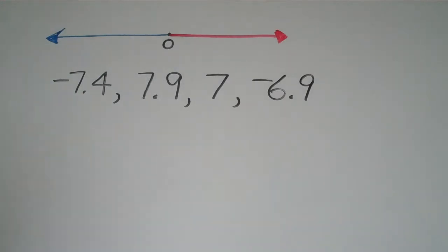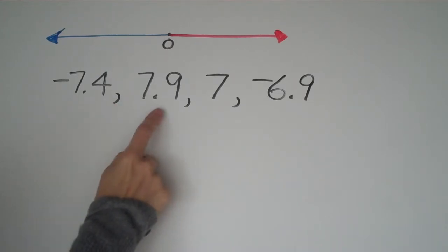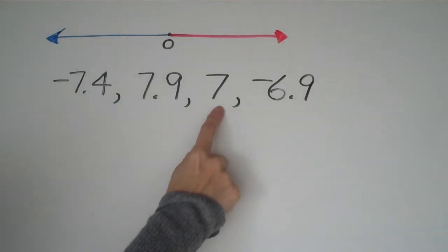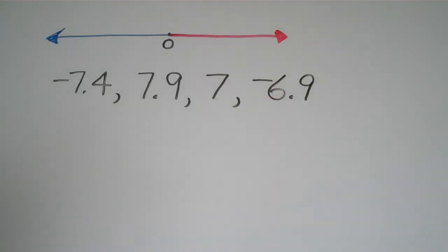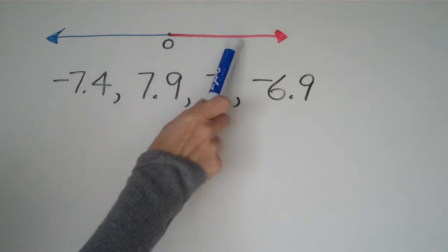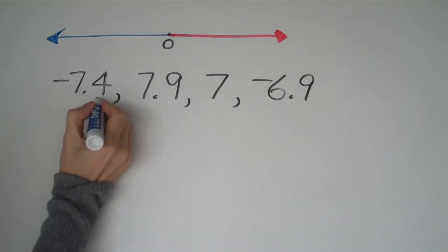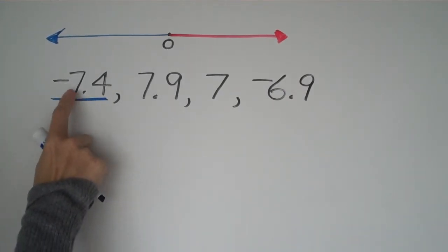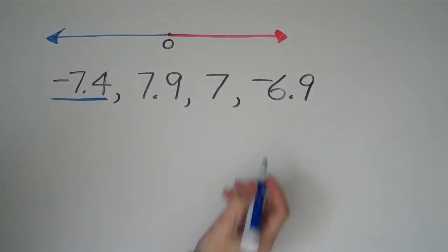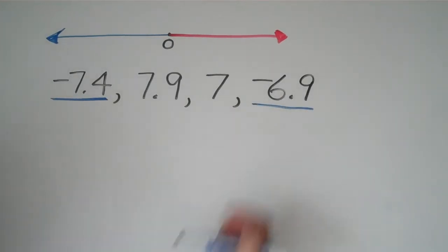Here we go. We have negative 7.4, 7.9, 7, and negative 6.9. The first thing I'm going to do is think about negatives and positives and underline anything that's negative. Here's negative 7.4 — also read as negative 7 and 4 tenths — and negative 6.9, which is negative 6 and 9 tenths. Those two will be listed first since we're ordering from least to greatest.